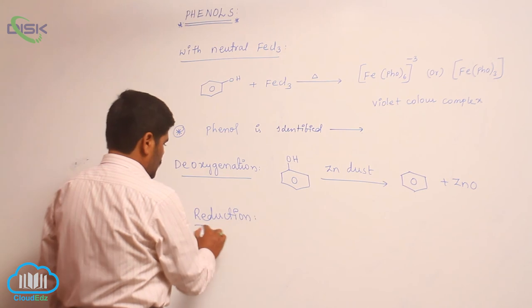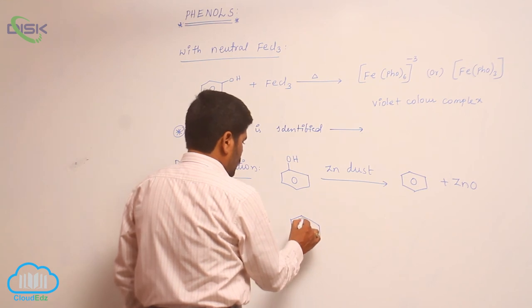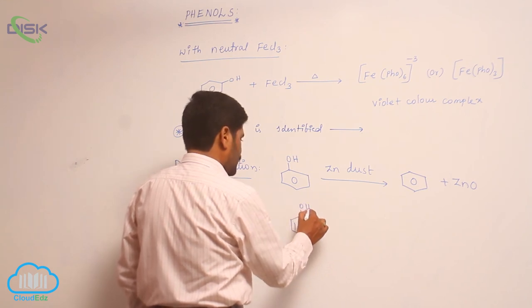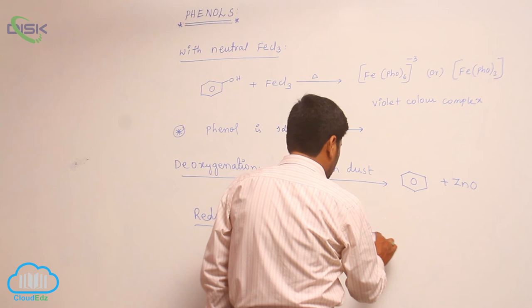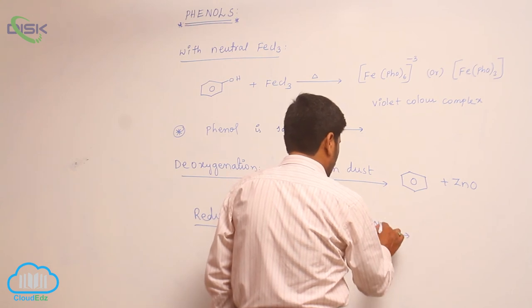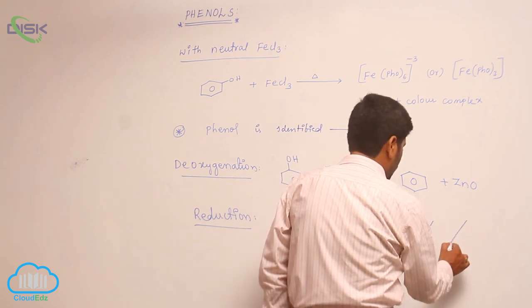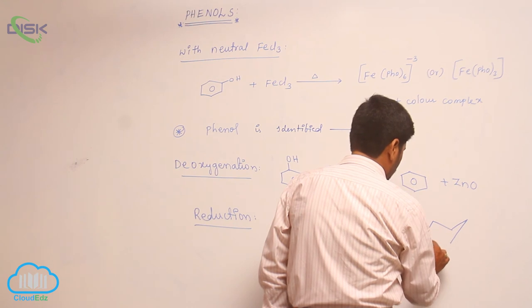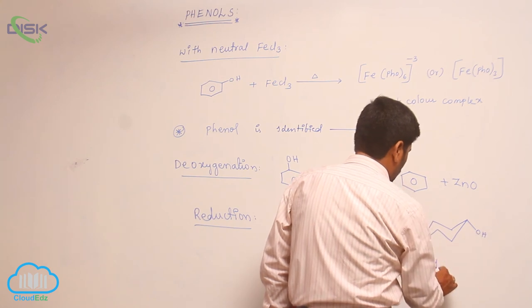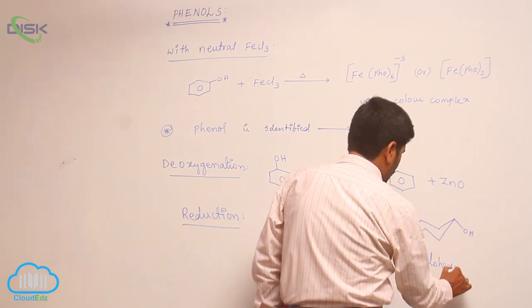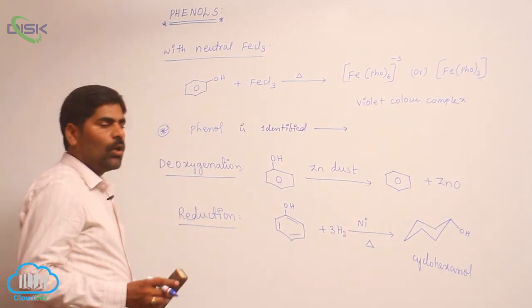Next is reduction of phenol. Phenol reacts with three moles of hydrogen in the presence of nickel catalyst to form cyclohexanol.